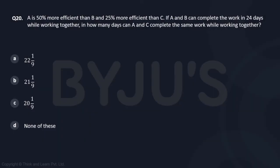A is 50% more efficient than B. So, if I write the efficiency of A, it is 1.5 times B and this is 1.25 times C.